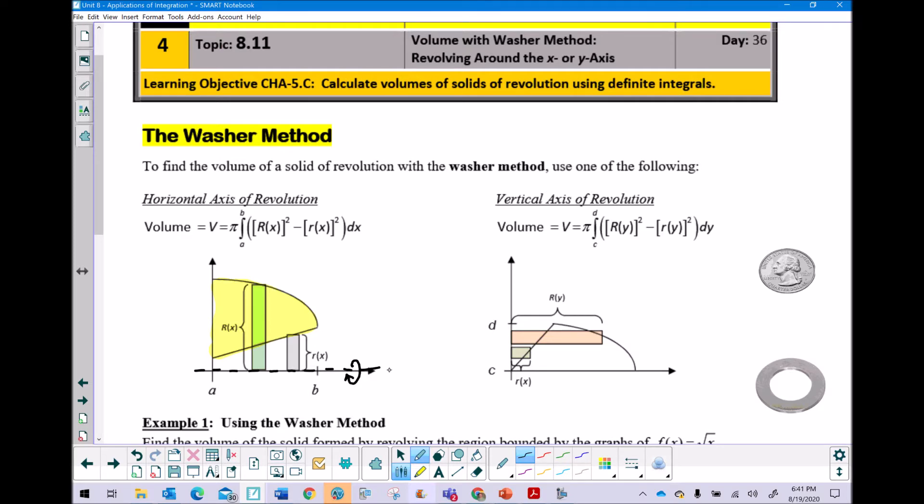Now immediately whenever you have a picture that looks like this, in other words your yellow shaded region that's away from your axis of revolution, or this daylight area, this white space that separates, that is going to be your indicator that you're going to use the washer method.